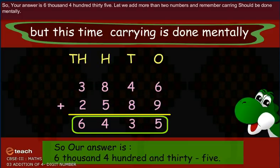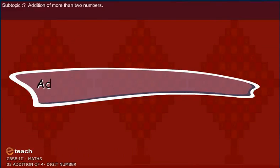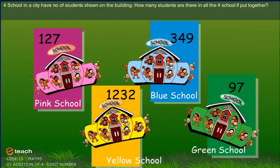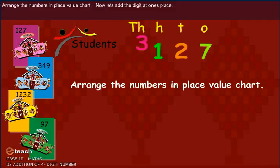Let's add more than two numbers and remember carrying should be done mentally. How many students are there in all the four schools if put together? Arrange the numbers in place value chart.